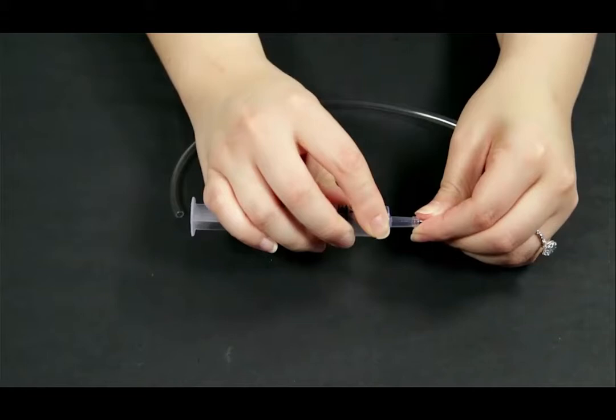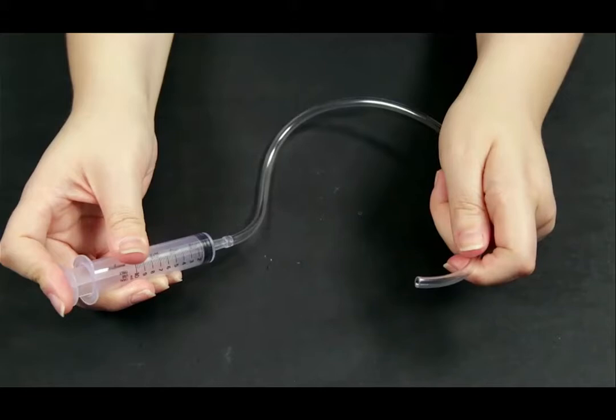A: Fit the end of the tubing over the tip of one syringe without an eye screw. B: Depress the plunger on the syringe completely.